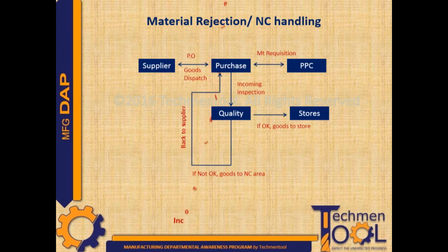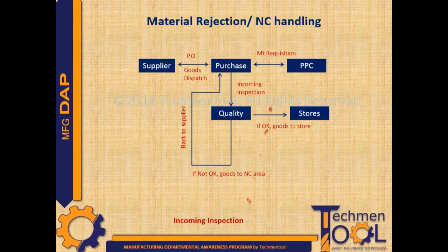Once purchase receives the goods, they send them to quality to carry out an incoming inspection process. During incoming inspection, if the inspector finds all goods are okay, then it will go to the store. But if any NCs are observed, quality sends the goods to the NC area, from where they go back to the supplier through the purchase department. In some cases, quality accepts goods under deviation if the received goods meet major requirements.